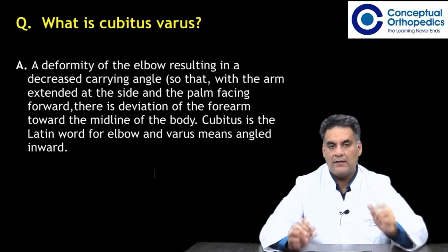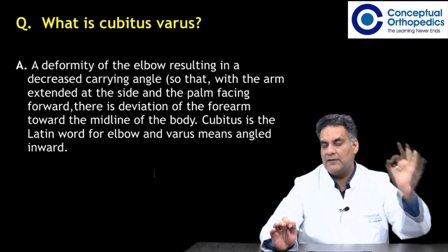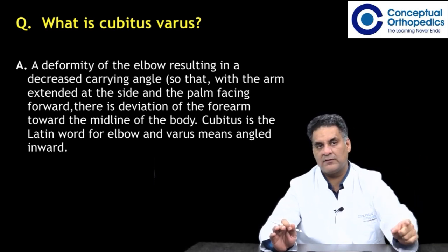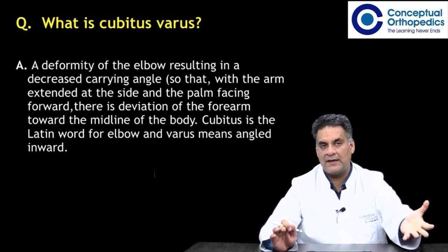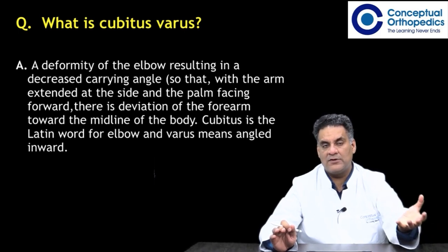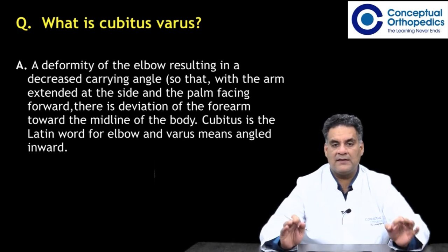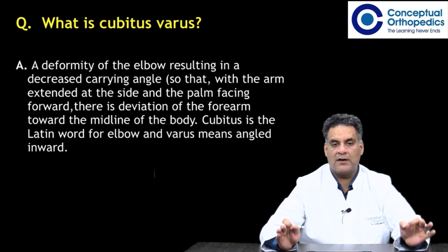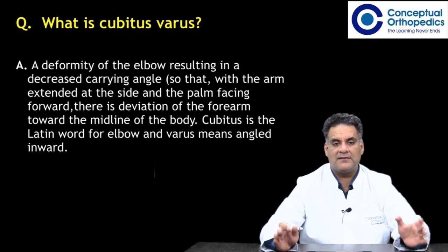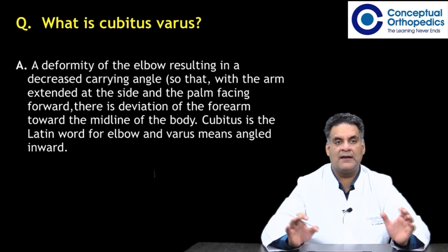What is cubitus varus? You can only comment on cubitus varus if the elbow can extend to neutral; if that is not possible, you cannot assess it, because the three-point relationship and the carrying angle change when there is flexion of the elbow. It is a deformity of the elbow resulting in decreased carrying angle, so that with the arm extended at the side and the palm facing forward (supination), there is deviation of the forearm towards the midline. Cubitus is the Latin word for elbow and varus means angled inwards.